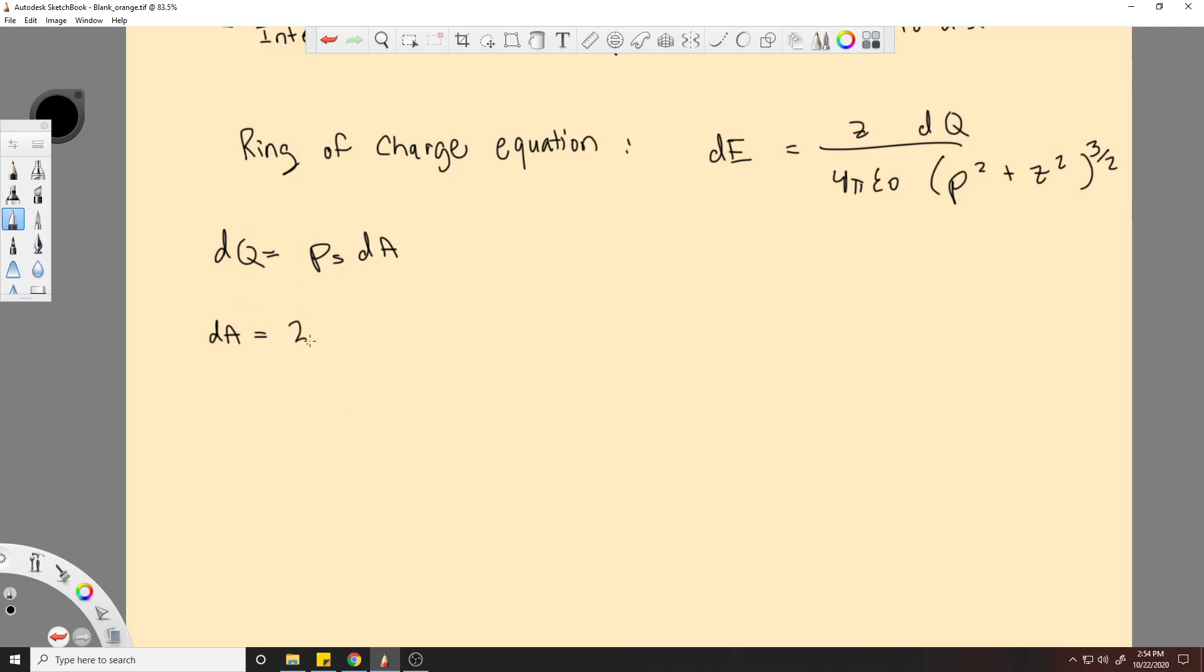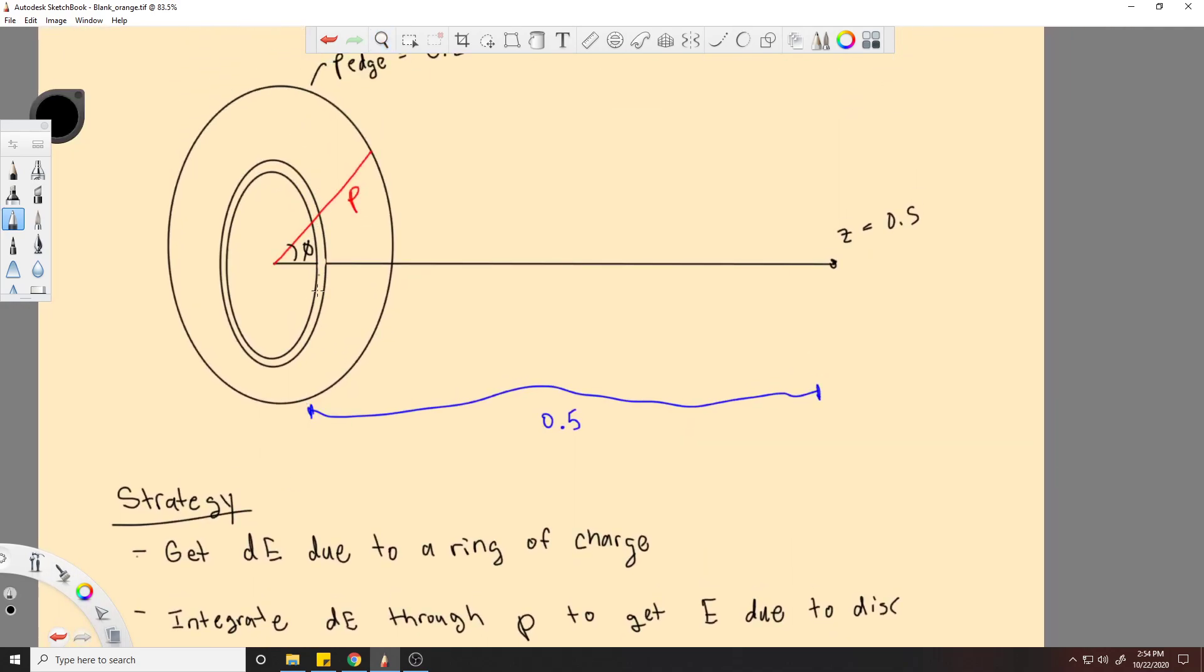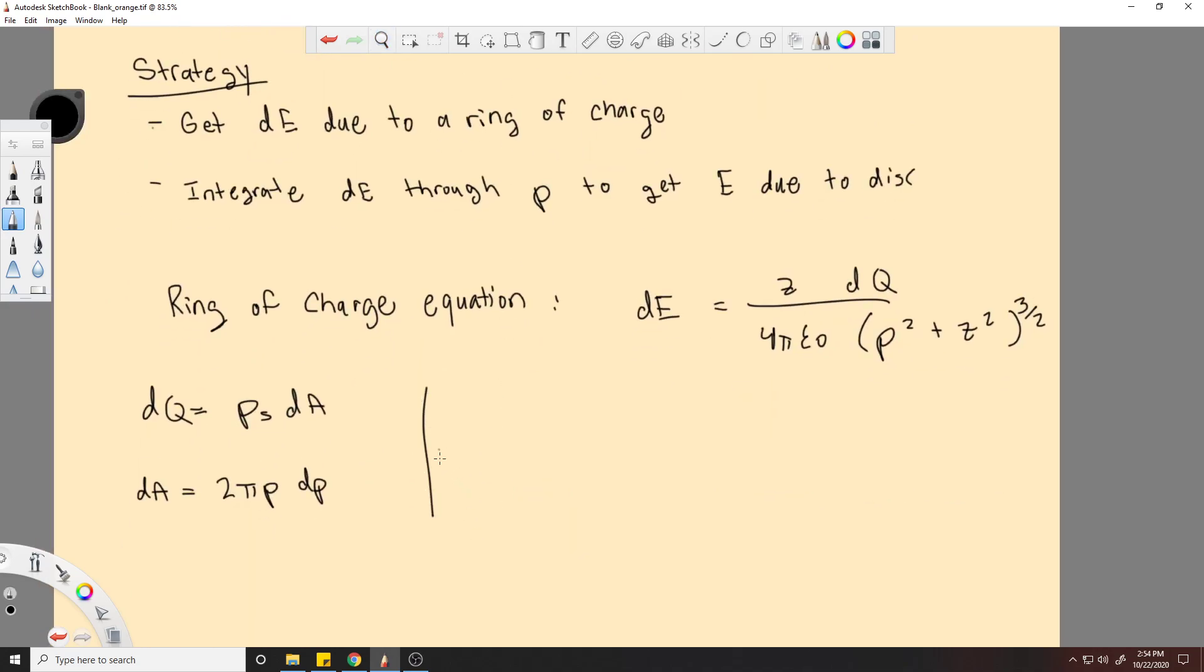And dA in our problem is going to be 2 pi rho d rho. And the reason why is because you have a circle. The circumference is 2 pi r, right? And you would just multiply that by some sort of d rho right there. And another way you can think of it is like if it was like a rectangle, the length would be 2 pi rho by the circumference essentially. And then this would be just d rho, and that would give you your area.